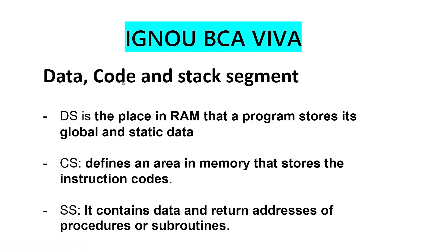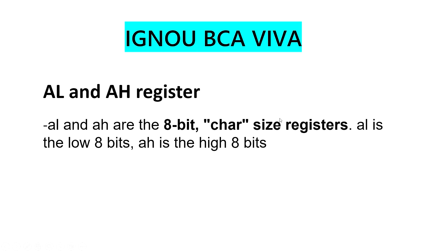Data, code, and stack segment: the data segment is a place in RAM that a program stores global and static data. Code segment defines an area in memory that stores the instruction code. Stack segment contains data and return addresses of processes. These are very small definitions, so there is no problem.